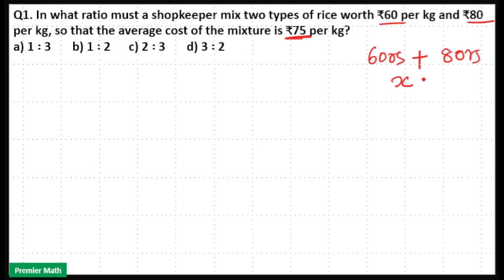We need to find out the ratio in which the shopkeeper has to mix these two types of rice to get ₹75 rice per kilogram. Here we use the allegation method.